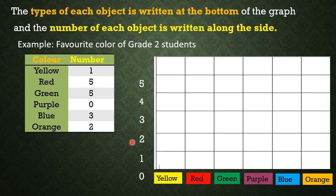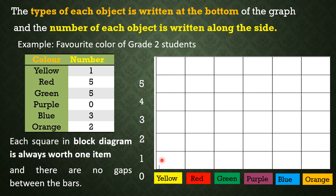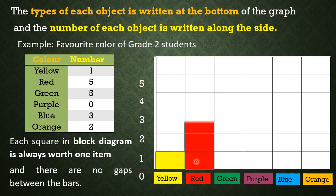Now it's time for you to color each square or each block. Take note that each square in a block diagram is always worth 1 item. The number of students that like yellow is 1, so we are going to color 1 block only. There are 5 students who like red, so we are going to color 5 blocks.